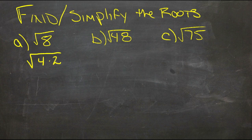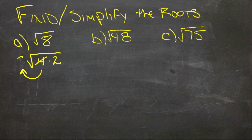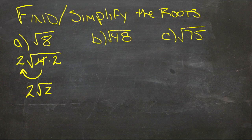8 is the same as 4 times 2. 2, we still don't know the root for, it's not even. But 4, we do know the root for. So we can pull 4 out of the root, and we can say the square root of 4 is 2. That gives us a 2 outside the root, and a 2 inside the root.